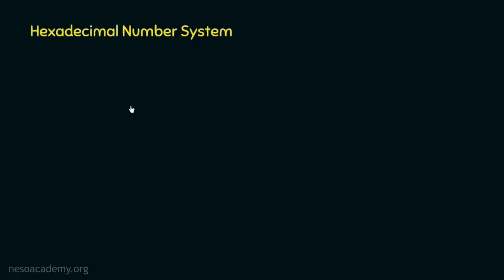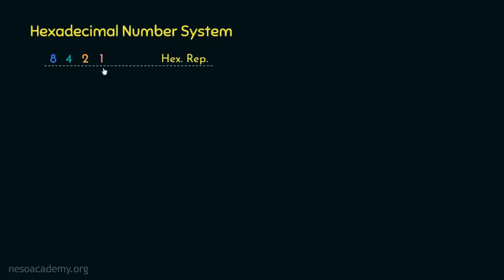Similar to octal, hexadecimal also has a special significance with binary numbers. Basically, every 4-bit binary number represents a hexadecimal symbol. Let me illustrate. In a 4-bit binary number, the place values from the LSB to MSB are 1, 2, 4 and 8.